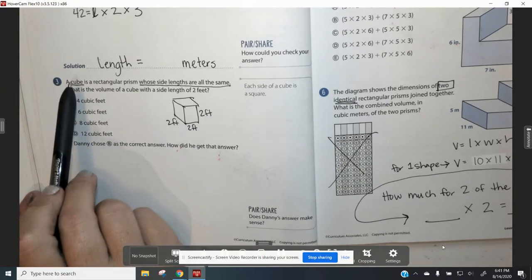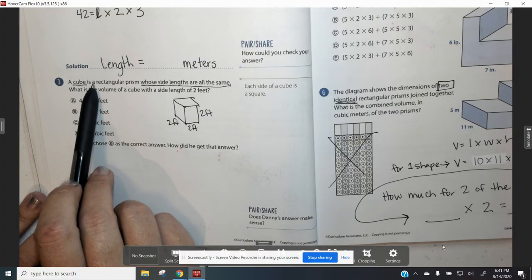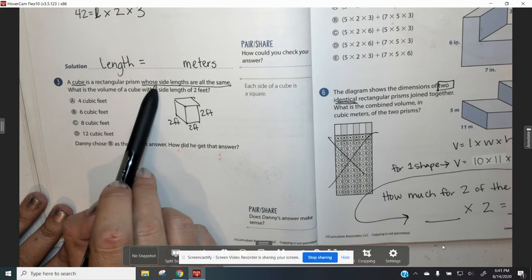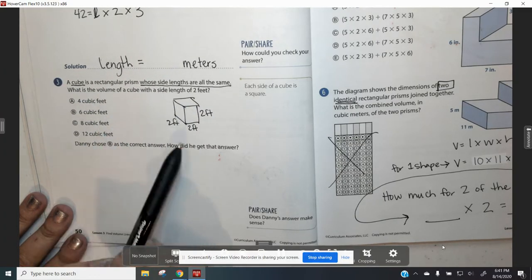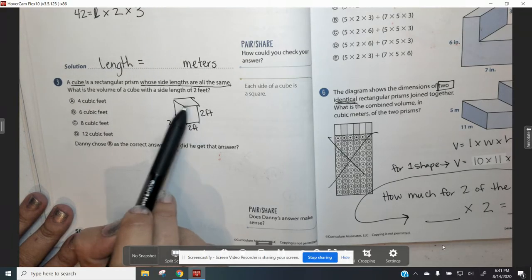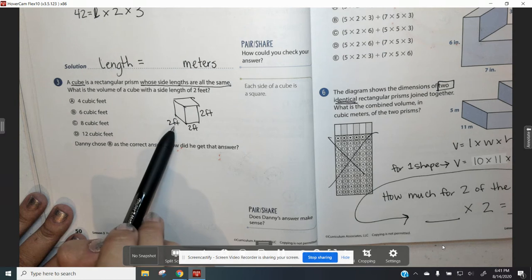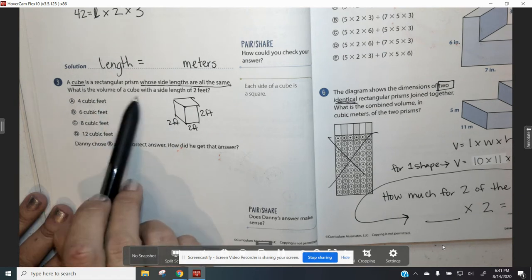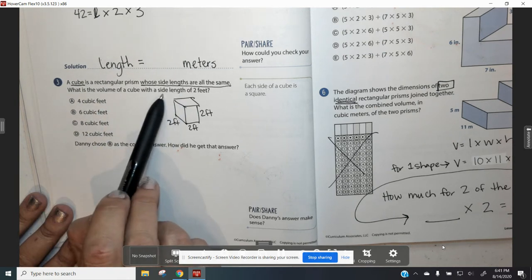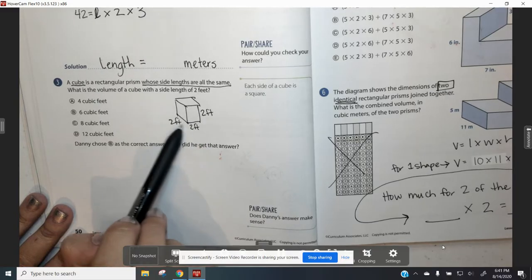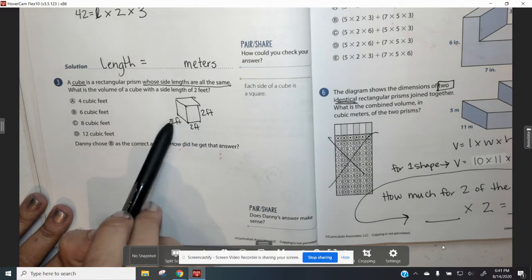For number three, we're looking at a cube. A cube is a rectangular prism whose side lengths are all the same. So every single side of this rectangular prism has a length of two feet. What is the volume of the cube with a side length of two feet?